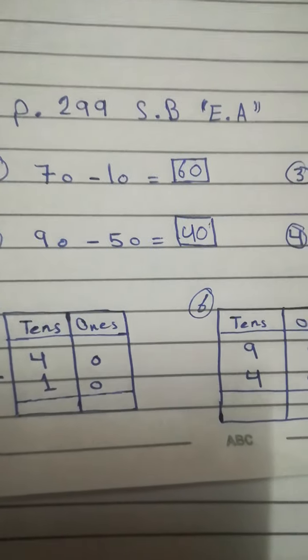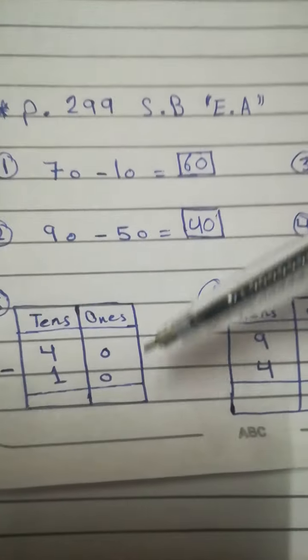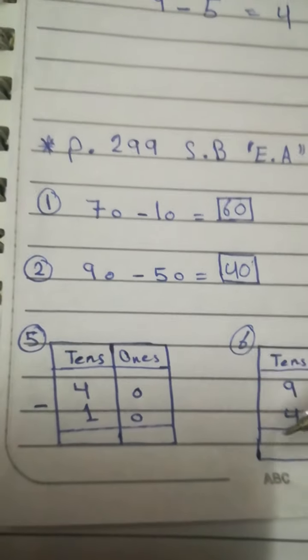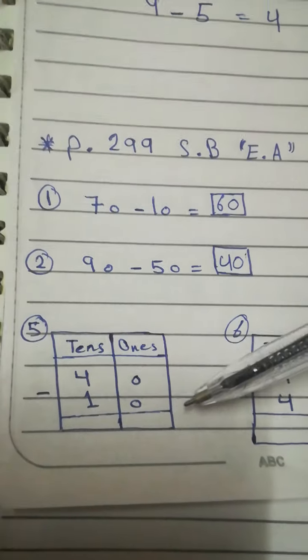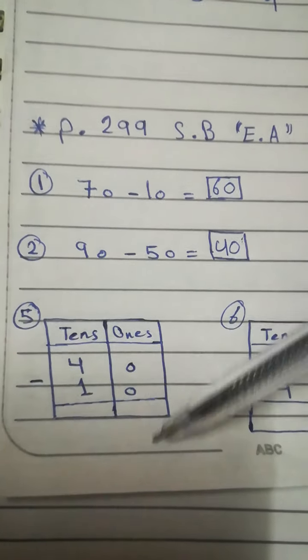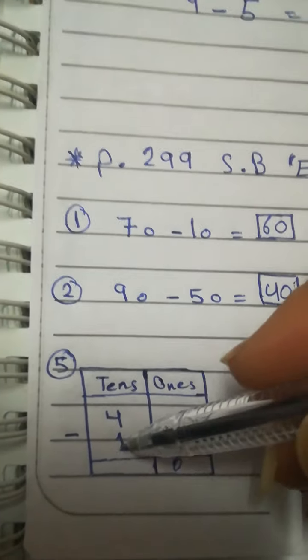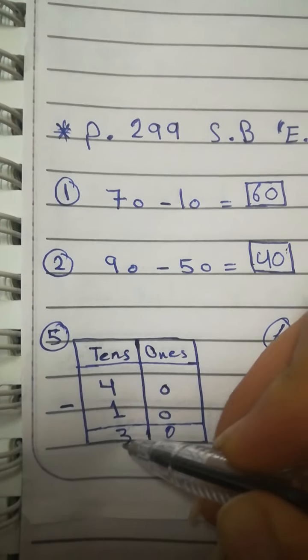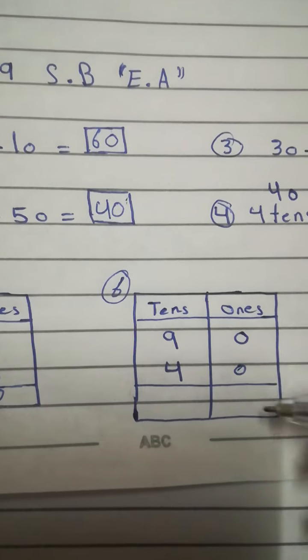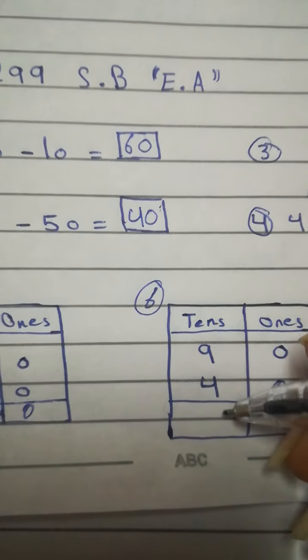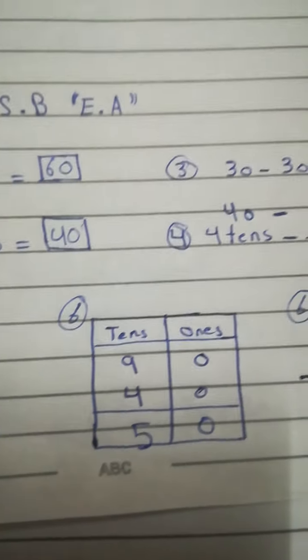Now, here into the place value chart. Look. It's too easy, by the way, to subtract by using the place value chart, right? Because we know the ones and the tens. So, just we have to start from the ones. 0 minus 0 is 0. 4 minus 1 is 3. Here, 90 minus 40. 0 minus 0 is 0. And 9 minus 4, how many? 5. Excellent.